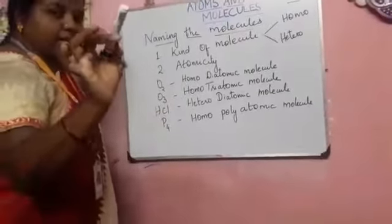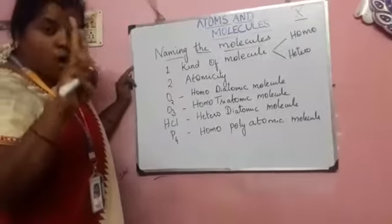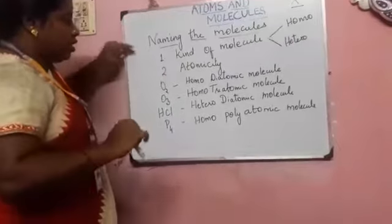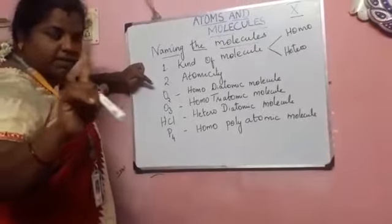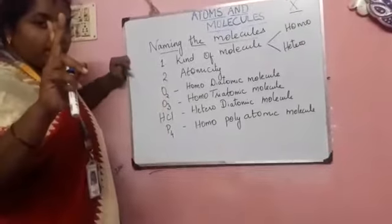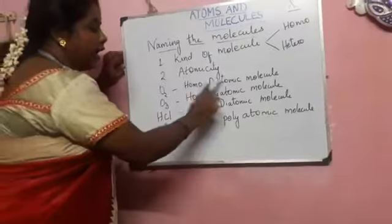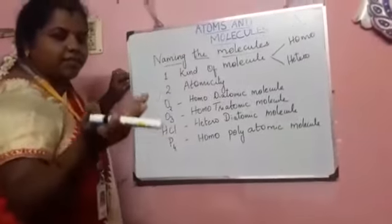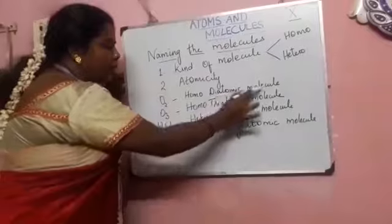For example, O2. Two oxygen atoms are combined together, so it should be homo — only oxygen is present. And how many atoms? Two, so it is diatomic. Therefore, O2 is a homo diatomic molecule.